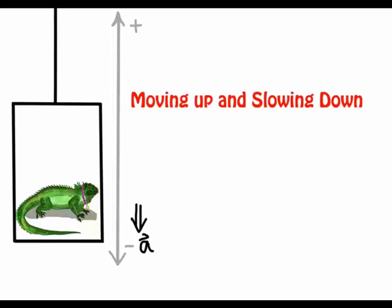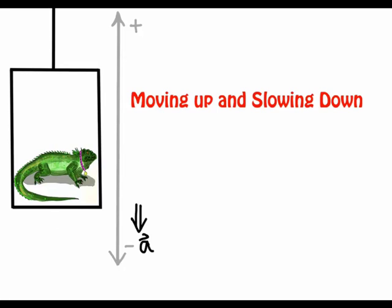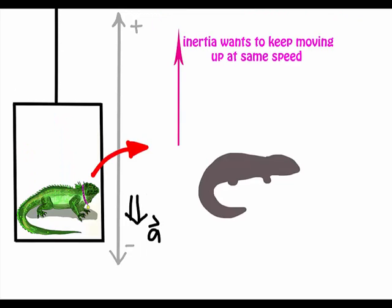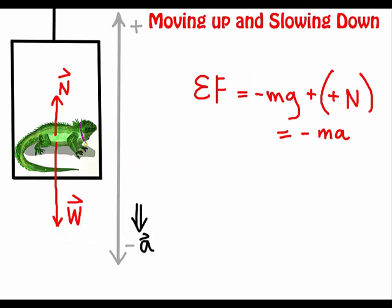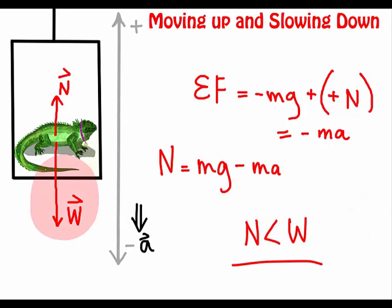Now, the elevator is moving up and slowing down. Here, the iguana and the elevator are initially moving upwards at a constant speed and slowing down to rest at a higher floor. We have the acceleration pointing downwards because it's slowing down and causing a decrease in velocity. We know that acceleration will be down and W is causing this. In this case, the inertia of the iguana would prefer to keep moving up at the same speed, but the force the elevator floor exerts on the iguana decreases because there is acceleration in an opposite direction. We can see this from our equation. We can also see that N will equal the weight minus ma, so the normal force will be less than the weight and this causes the iguana to slow down.